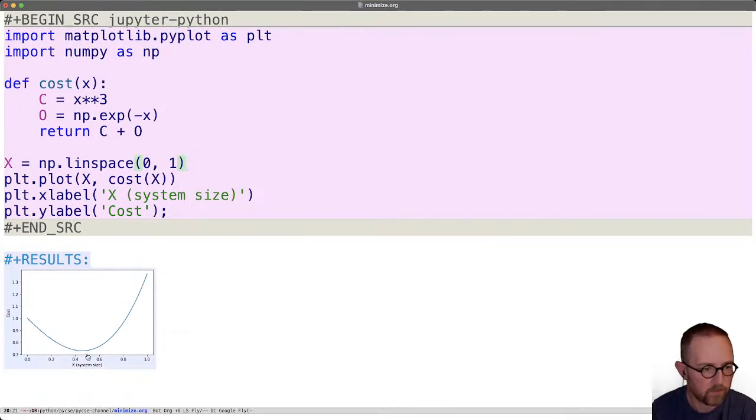So indeed we see there is a minimum in here and it's somewhere around 0.5, a little less than 0.5 I would guess since that's probably right there. All right, so that's already a reasonable estimate of where the minimum x value is, somewhere around 0.5.